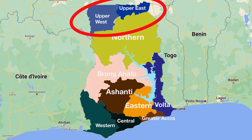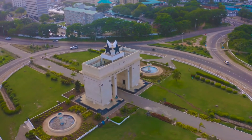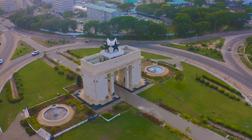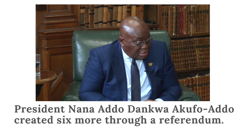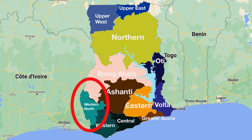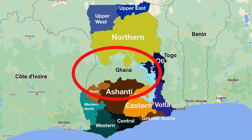In 1983, the Upper region was split into two, with one part named the Upper East and the other named the Upper West region. For the next 35 years Ghana maintained 10 regions, until 2018, when President Nana Akufo-Addo created six more through a referendum. Oti was carved out of the Volta region, Western North came out of the Western region, and Ahafo and Bono East were both carved out of the Brong Ahafo region.